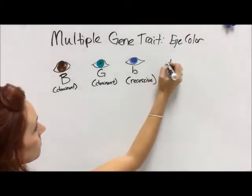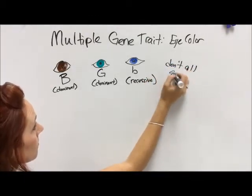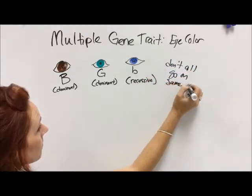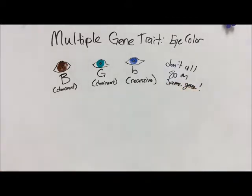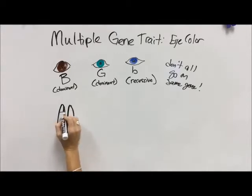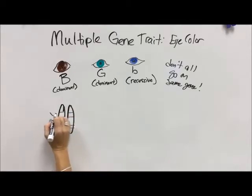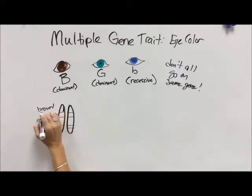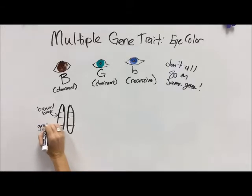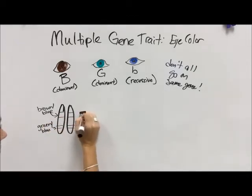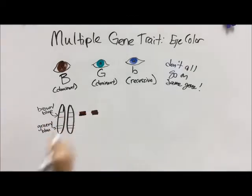Brown is dominant. Interestingly, green is also dominant. Blue is recessive — but the key is they don't all go on the same gene. I'm going to draw one pair of chromosomes here with two gene slots. We'll call the top one the brown-blue gene, and the bottom one the green-blue gene. Technically they don't go on the same chromosome, but for the sake of working through this, we're going to do it this way.